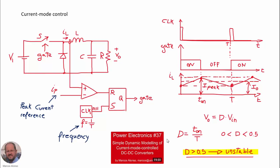Also, in this previous video, we said that for duty cycles higher than 0.5 the converter becomes unstable. So today we are going to focus on this aspect and study why the converter becomes unstable when the duty cycle is higher than 0.5 and how to solve this stability issue.